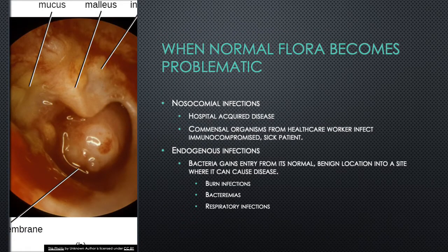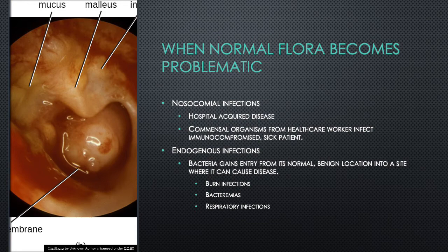Sometimes bacteria become problematic when they reach places they shouldn't be. Nosocomial infections are hospital-acquired infections, usually occurring when organisms from a healthcare worker colonize an immunocompromised patient or one with an open wound. Endogenous infections occur when organisms from the host itself gain entry to the wrong location. Examples include burn infections, bacteremia, and respiratory infections.